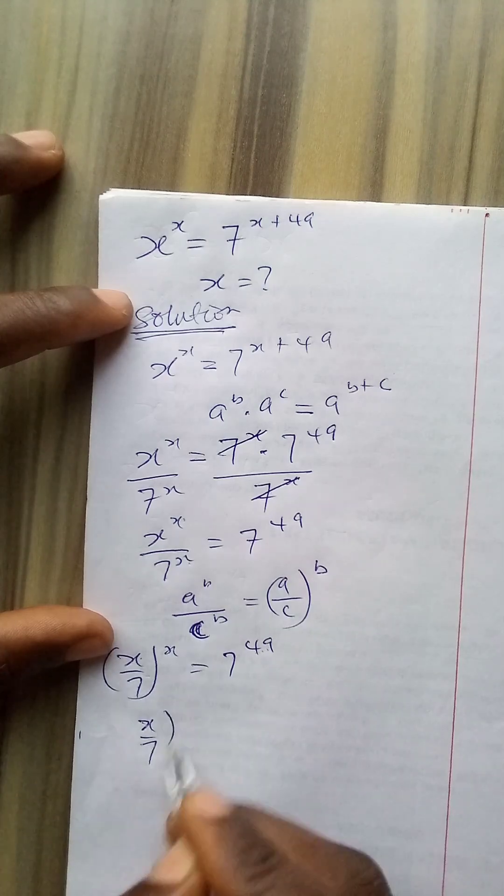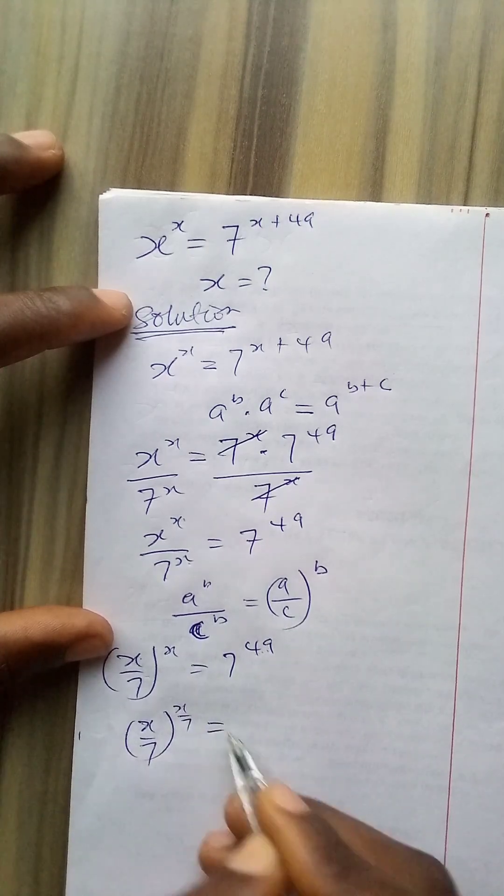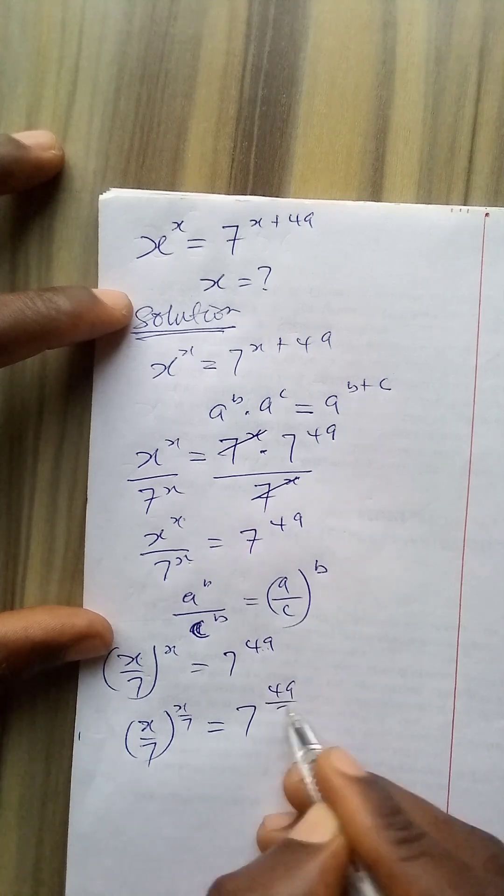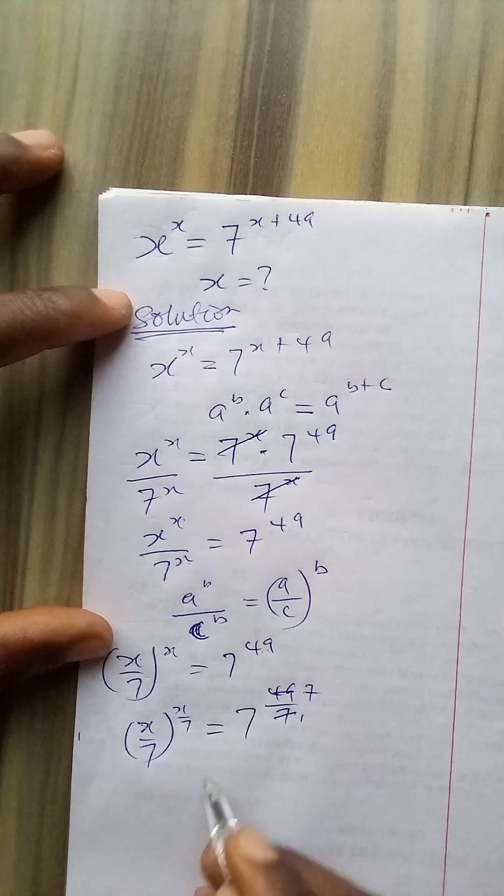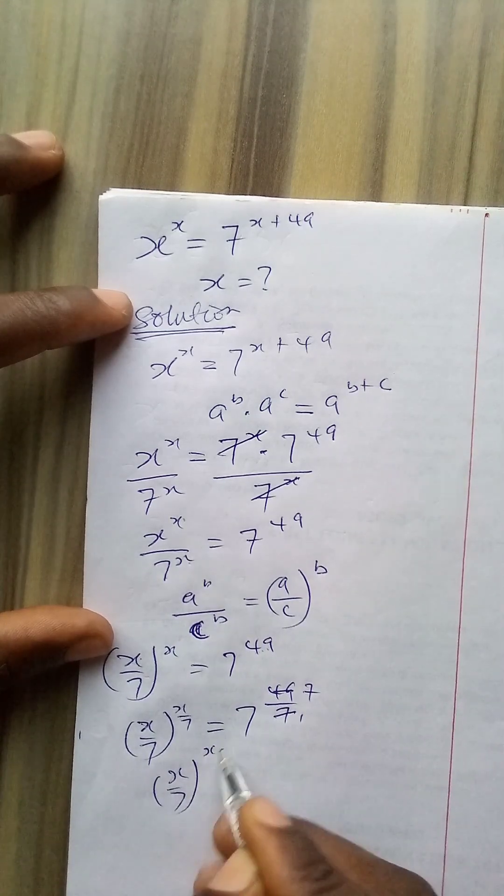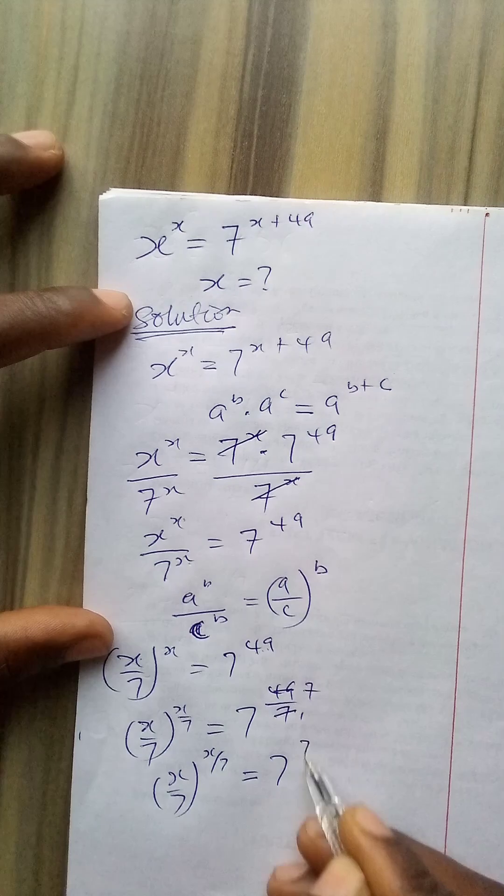I have x over 7 to the power of x over 7 equals 7 to the power of 49 over 7. 7 divided into 49 gives me 7. So I have x over 7 raised to power x over 7 equals 7 to the power 7.